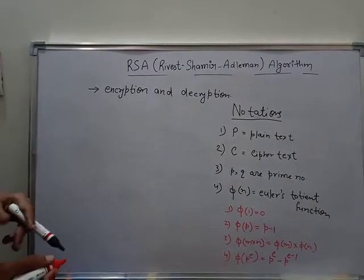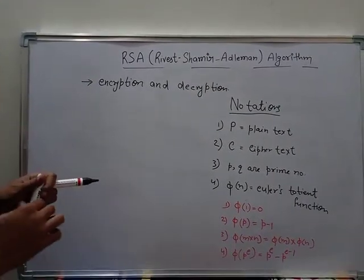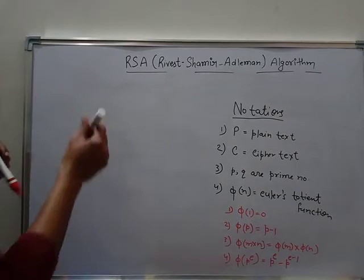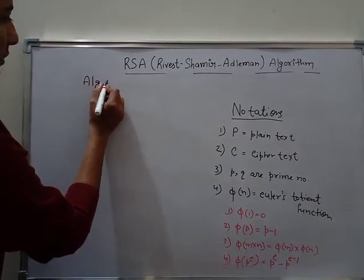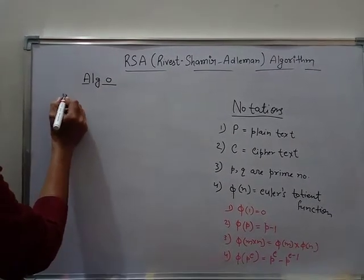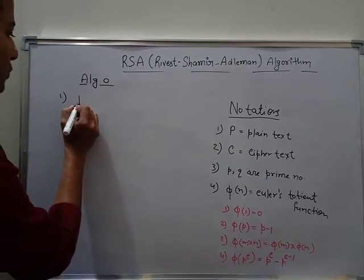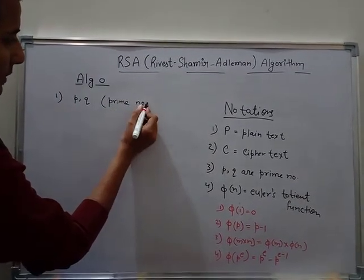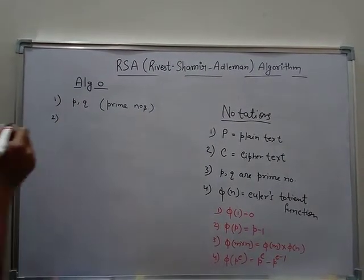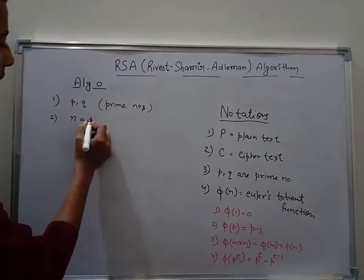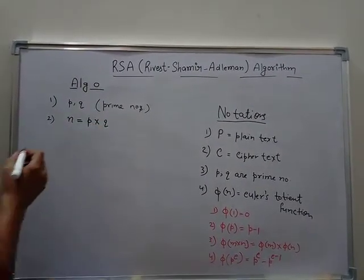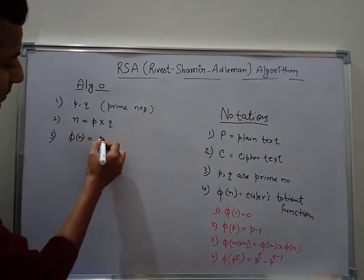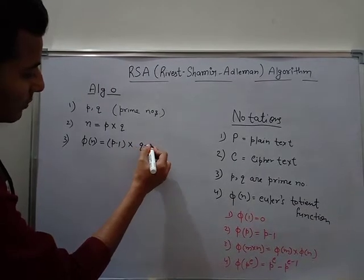Now, after seeing these notations, we are going to the algorithm. The very first step is we define two very large prime numbers, P and Q. Then we calculate N equal to P times Q. The third step is we calculate phi of N, the Euler's Totient function, equal to P minus 1 times Q minus 1.